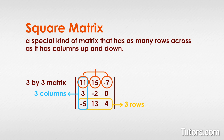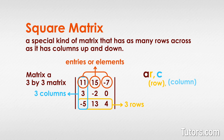In our square matrix, the top row has three numbers: 11, 15, and negative 7. These are three entries or elements. The matrix itself can be noted with any letter, but every element in that matrix will use the same letter. We will call our square matrix A, so all positions of all elements or entries are written as A with subscripts a_rc, with the first letter referring to rows.